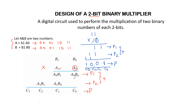In the same way, A0 B0 corresponds to C0. A0 B1 and A1 B0 are added together — their sum gives C1 and the carry goes to the next order. Adding A1 B1 with the previous carry gives C2, and the resulting carry becomes C3. Therefore C0, C1, C2, C3 are the product bits.